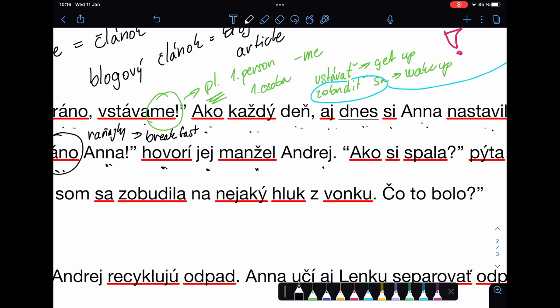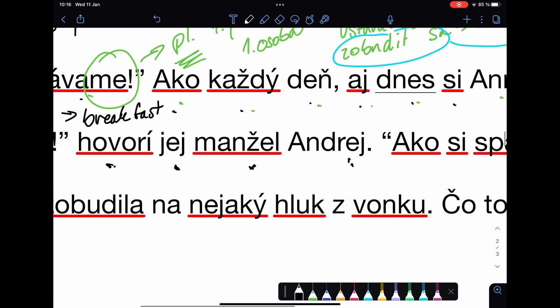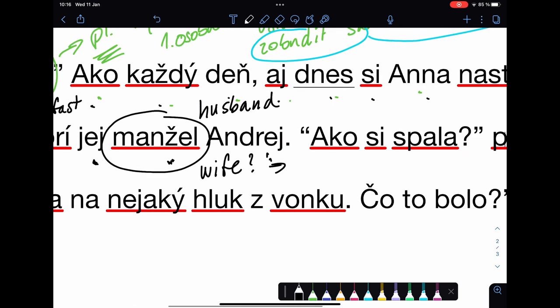Hovorí jej manžel Andrej. Tells her, her husband Andrej. Manžel is husband. Do you know the word for wife? To je manželka. This is the difference. There's no -ka.